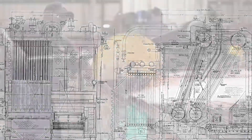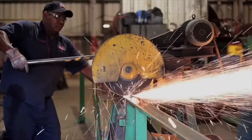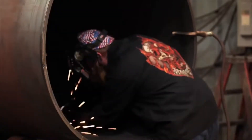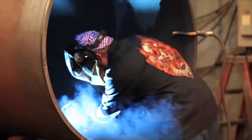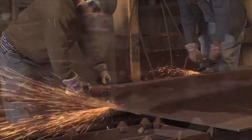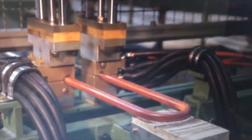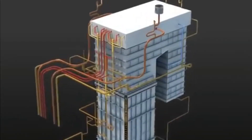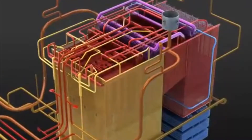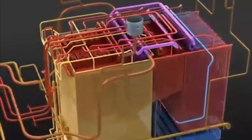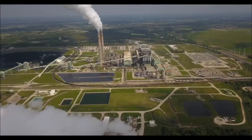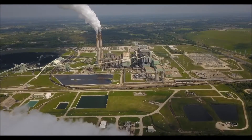Water tube boilers have more complex designs and manufacturing techniques than fire tube boilers, but they have one main advantage: almost no design limitations for steam production loads. The advancement of material technology and metal welding means water tube boilers can be built as large as possible. Therefore, water tube boilers are more suitable for large industries requiring high quality and quantity of steam, such as power plants.